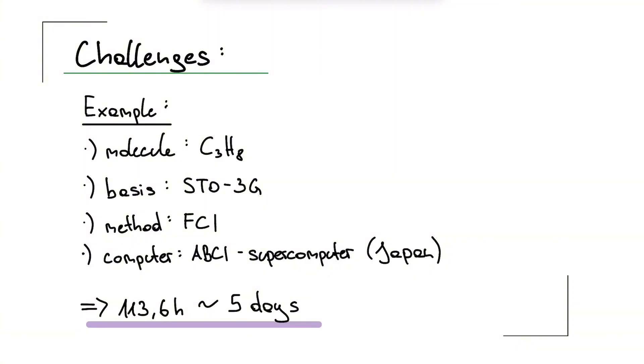To sum up, FCI is the most accurate method we have for simulating molecules. Approximations like DFT or Hartree-Fock are much faster, but they are far less reliable. Sometimes they give results that simply don't match reality. In the study we looked at, even for a small molecule like propane, just 11 atoms, it took 5 full days on a supercomputer to run FCI in a minimal basis.